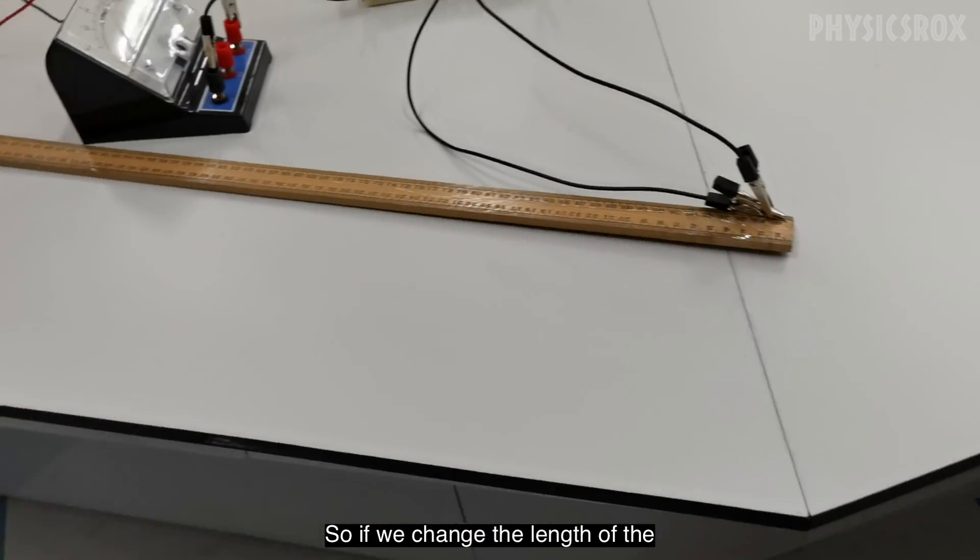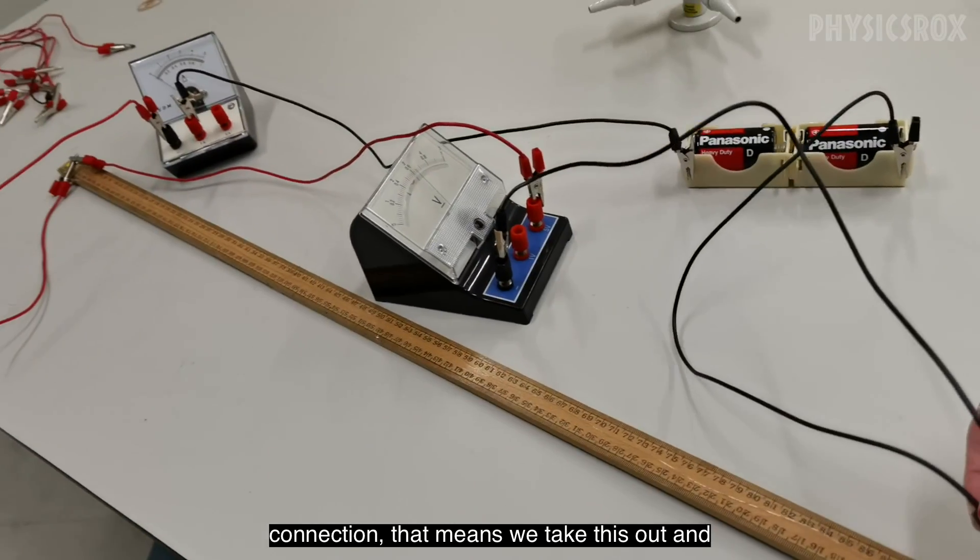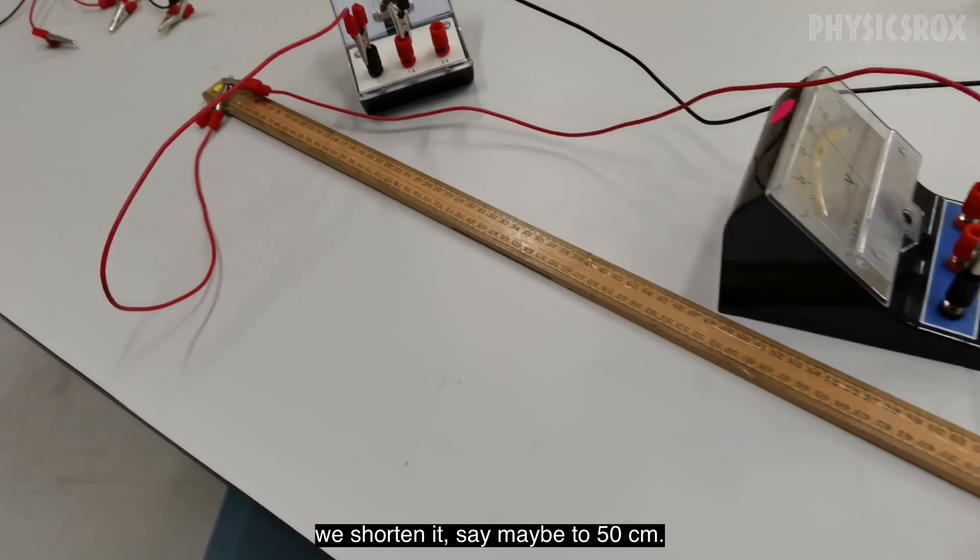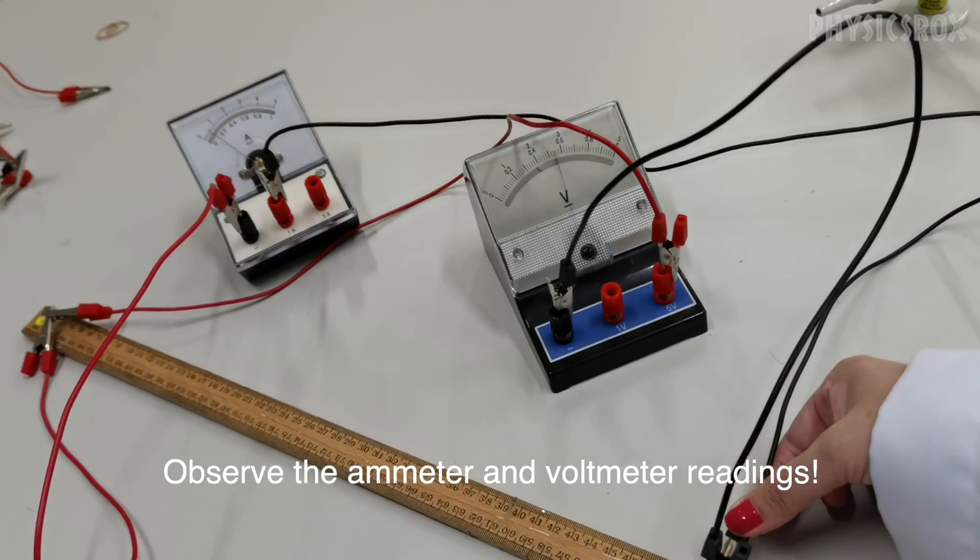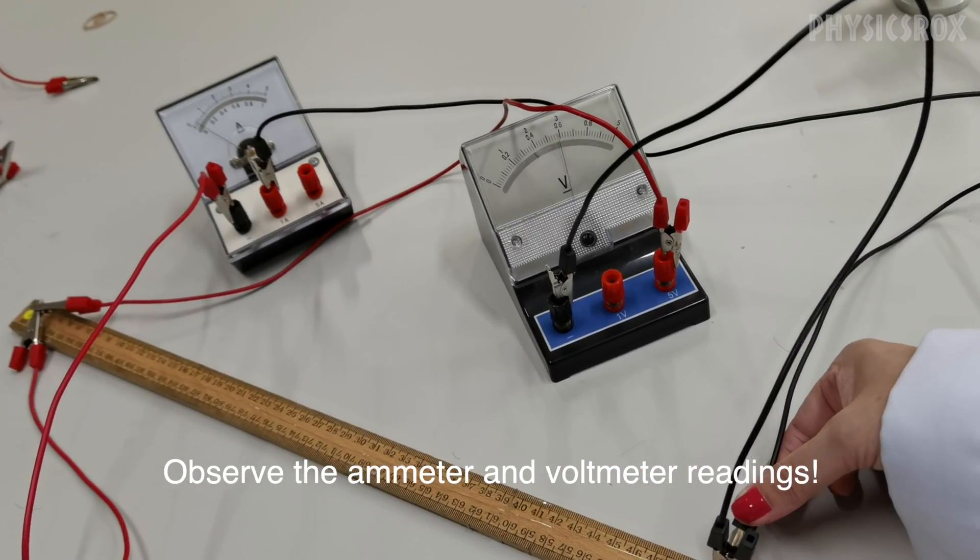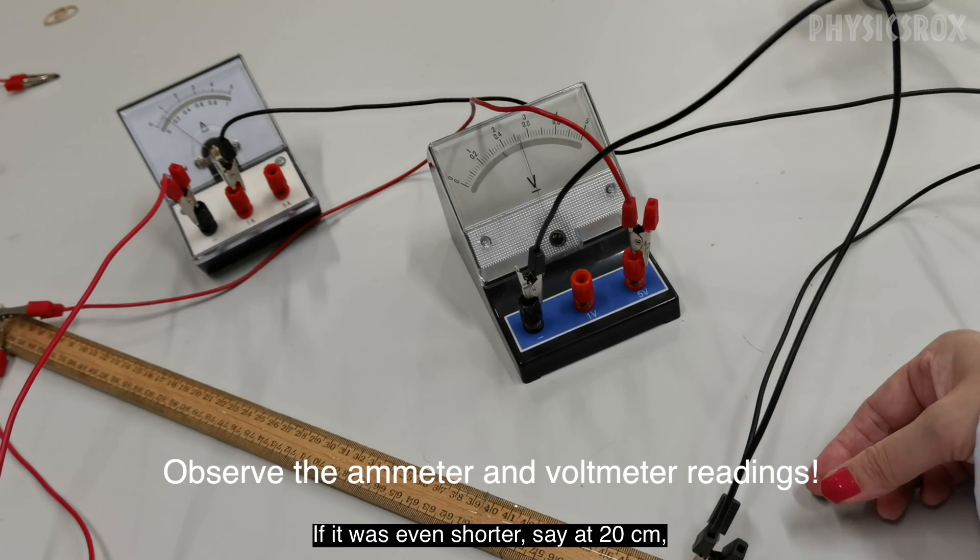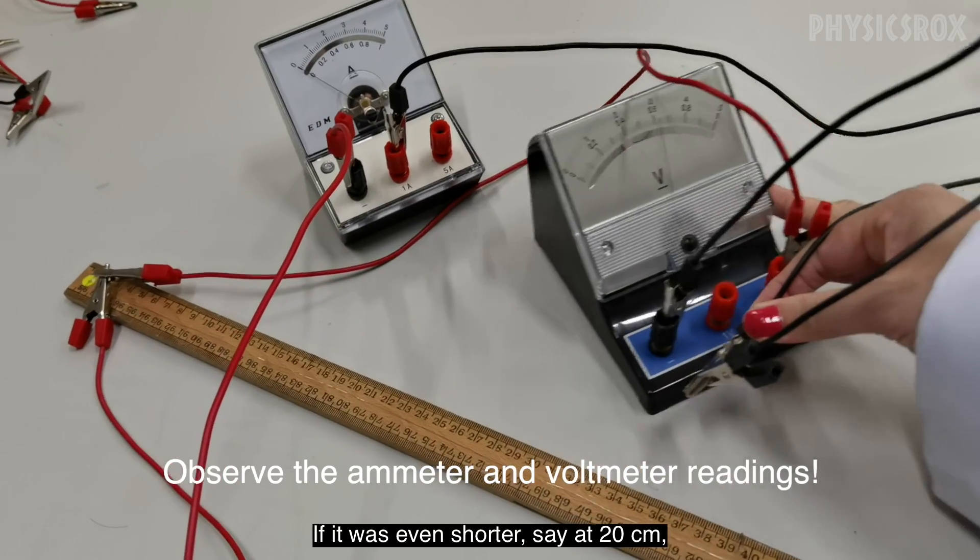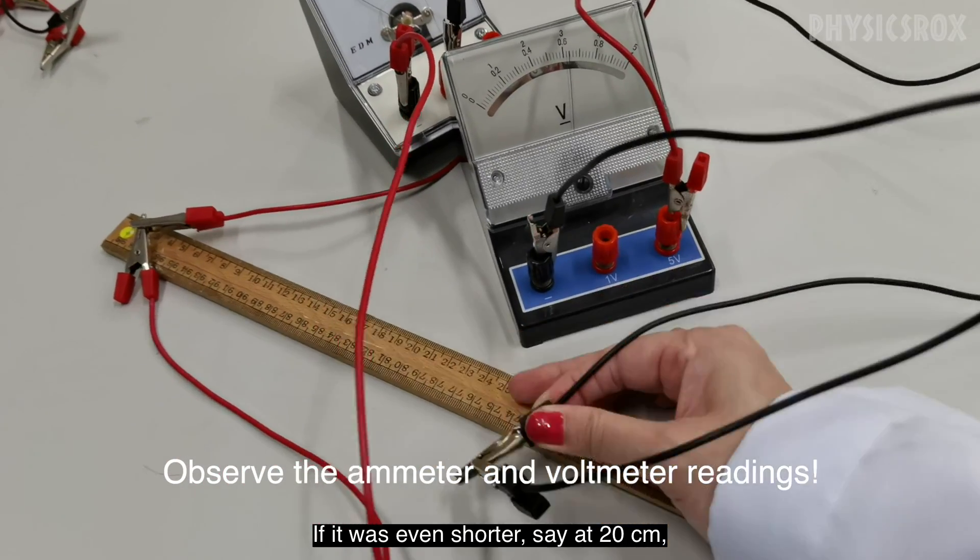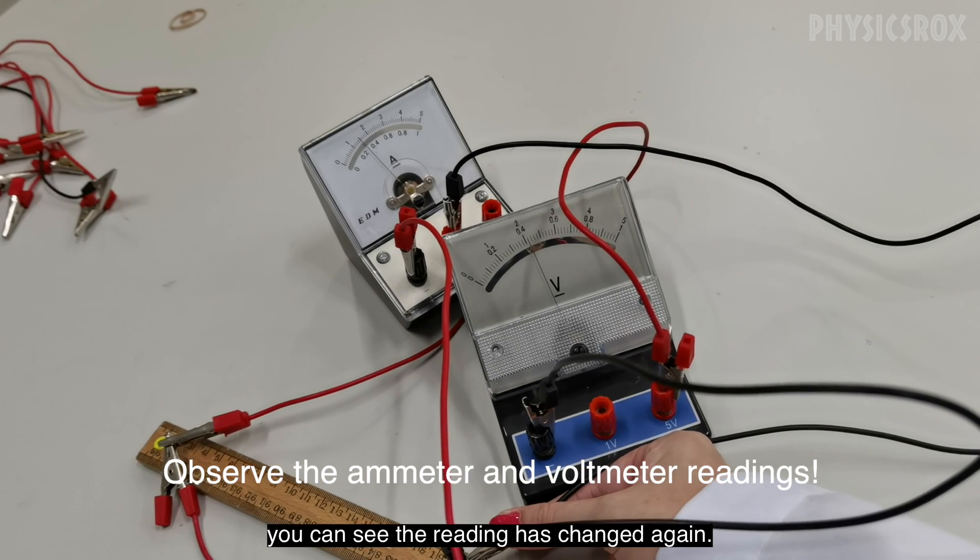So if we change the length of the connection, that means we take this out and we shorten it, say maybe to 50 cm. If it was even shorter, say at 20 cm, you can see the reading has changed again.